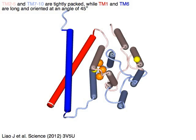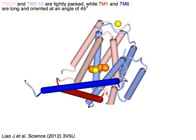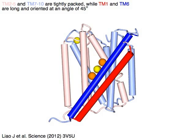TM-2-5 in pink and TM-7-10 in light blue are tightly packed, while TM-1 in red and TM-6 in blue are long and oriented at an angle of 45 degrees.